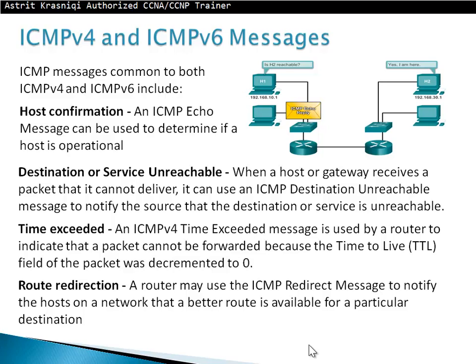Destination or service unreachable. When a host or gateway receives a packet that it cannot deliver, it can use an ICMP destination unreachable message to notify the source that the destination or service is unreachable. For example, if you send an ICMP message and you get a U, it means that a router is notifying you that the destination is unreachable.